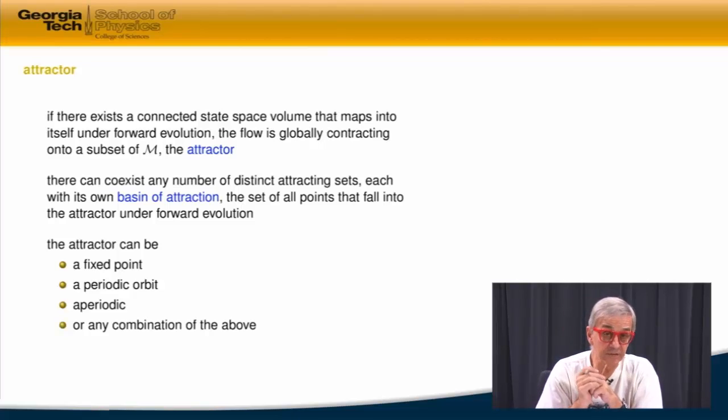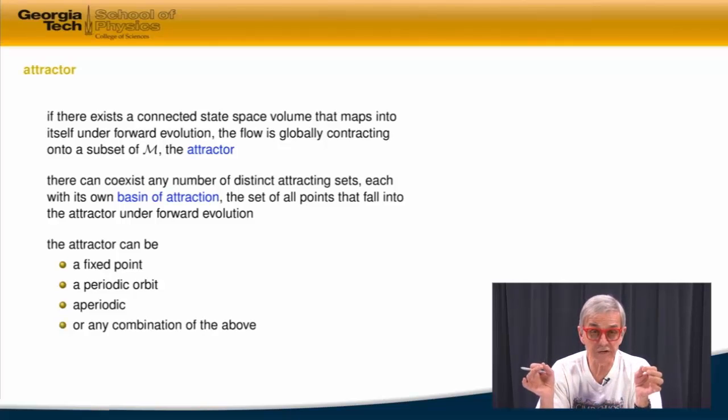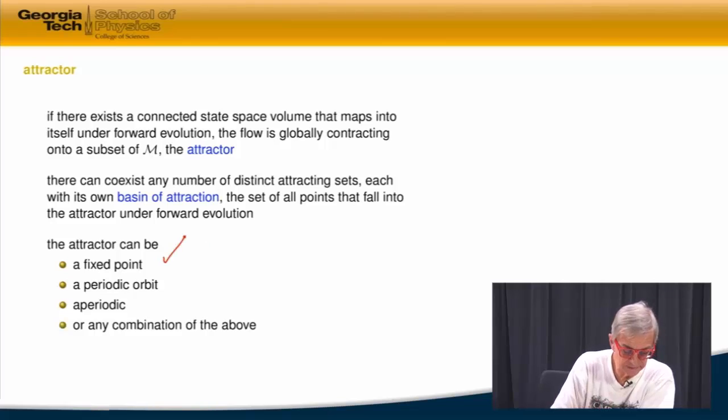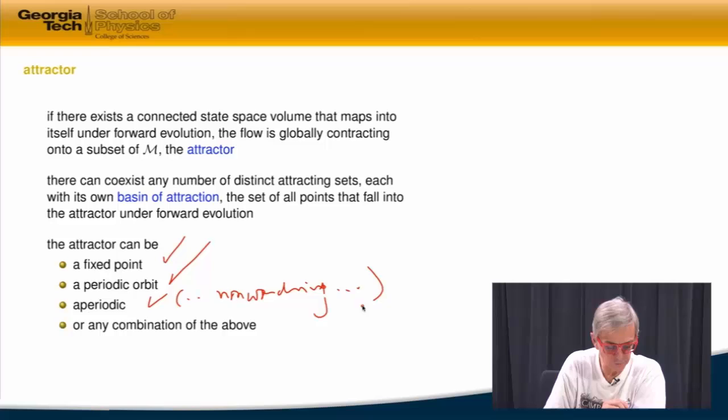This comes the notion, maybe a basin of attraction, meaning that all initial states will fall into that attractor rather than the other one. And the attractor can be fixed point, it can be periodic orbit, or aperiodic, in a sense, non-wandering, that will be more specific. Or, and that you also know, it could be any combination of the above.